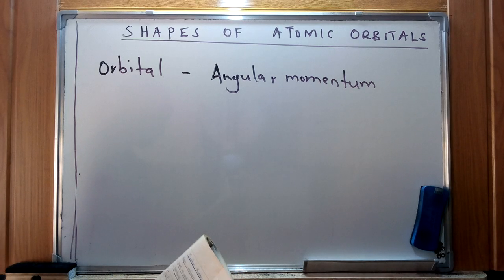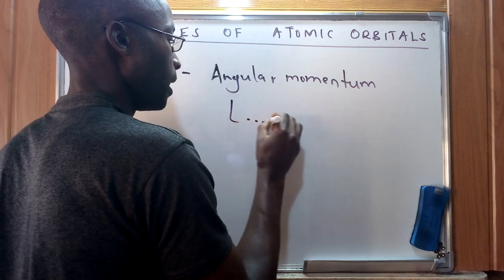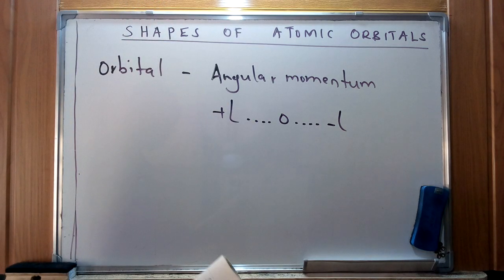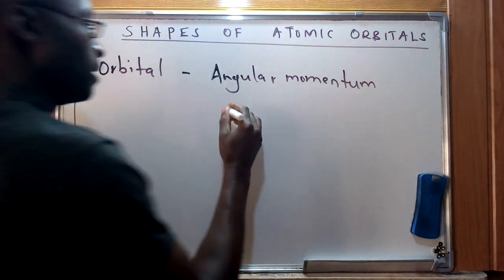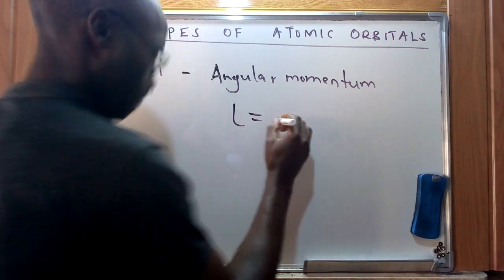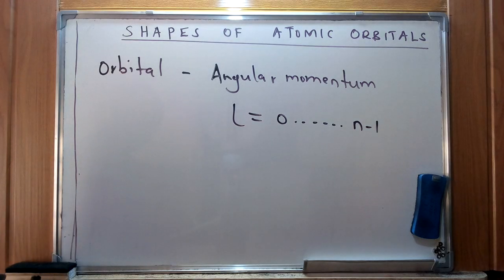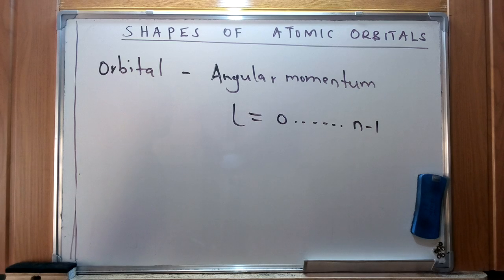These subshells are the derivatives of the principal quantum number, and these subshells are what we refer to as orbitals. The angular momentum quantum number l ranges from zero to n minus one, where n is the principal quantum number.